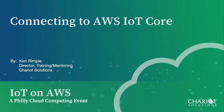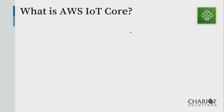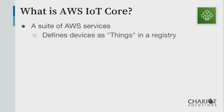This talk is about connecting to AWS IoT Core, specifically around certificates and managing those. IoT Core is a suite of AWS services. One thing you're going to do there primarily is register your different IoT devices. They call them 'things' — there's literally a menu called things, and you click on it and add a thing.